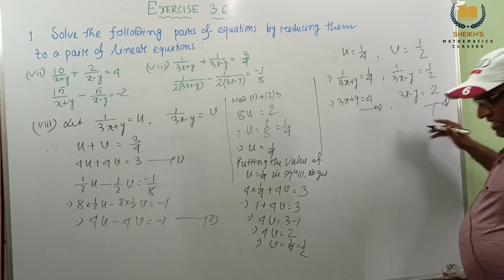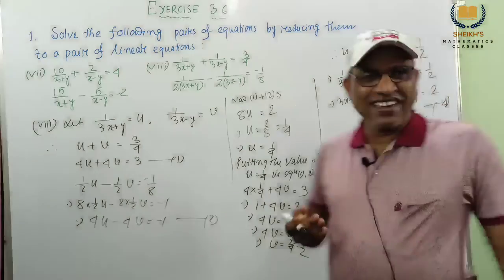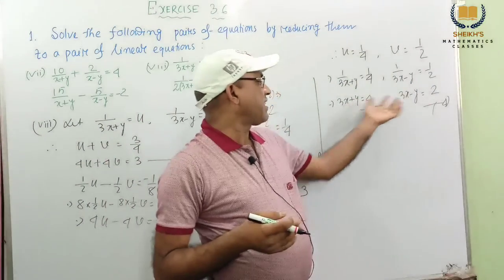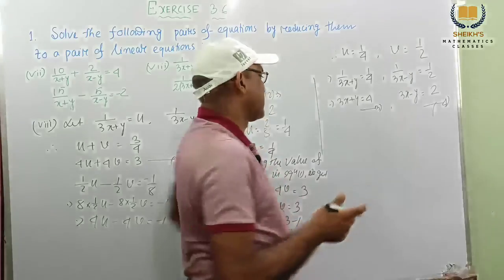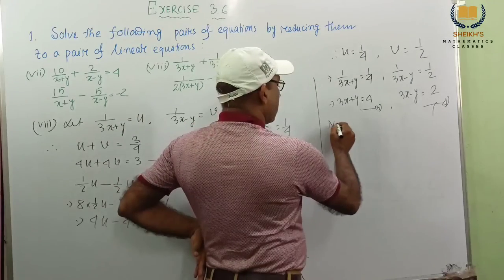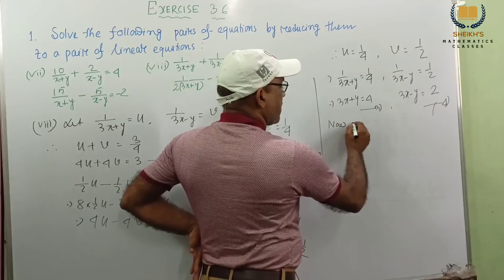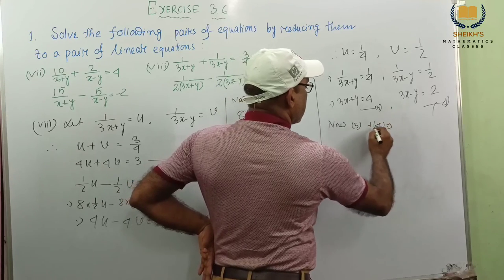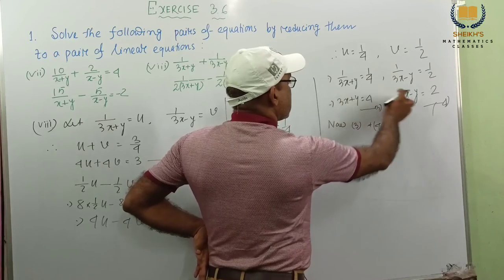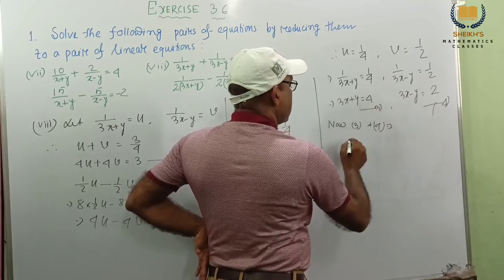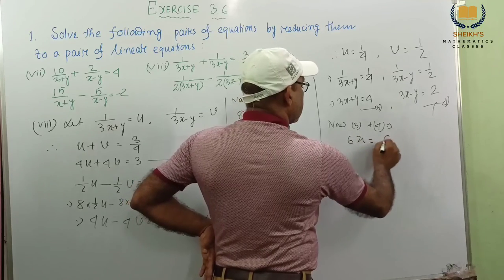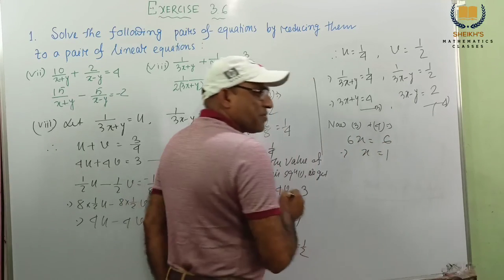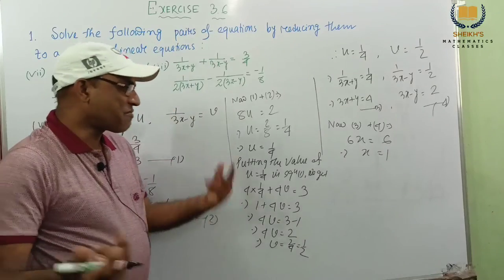Here again we get these are like coefficients: y and minus y. If we add, then y and y cancel. Now 3 plus 3 is 6x, and 4 plus 2 is 6. So x equal to 1. No problem. Now x equal to 1, we get. Putting the value of x equal to 1 in equation 3: 3 into 1 plus y equal to 4, 3 plus y equal to 4, and y equal to 4 minus 3, this implies y equal to 1.